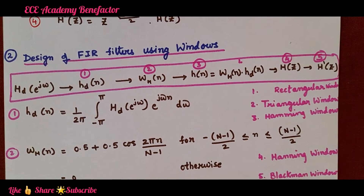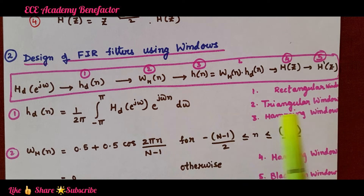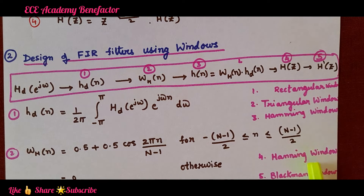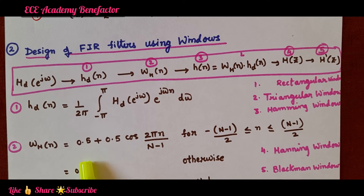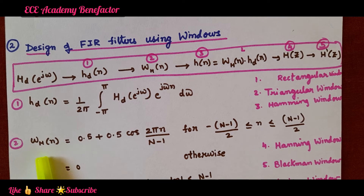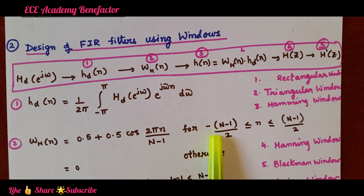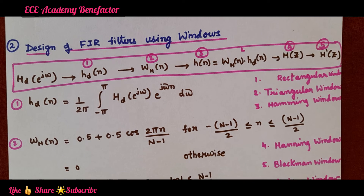After finding the desired impulse response, we have to find the windowing function w_h(n). There are a number of windows available: rectangular window, triangular window, Hanning window, Hamming window, Blackman window, and Kaiser window. Each window has its own definition. For example, the Hamming window is defined as: w_h(n) = 0.5 + 0.5·cos(2πn/(N−1)) for −(N−1)/2 ≤ n ≤ (N−1)/2, and 0 otherwise.